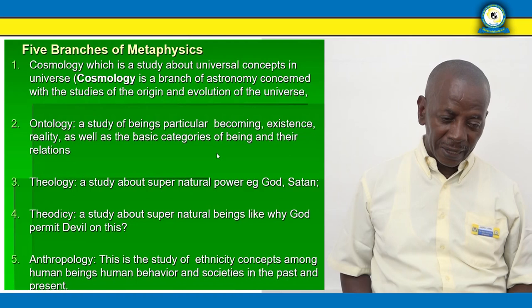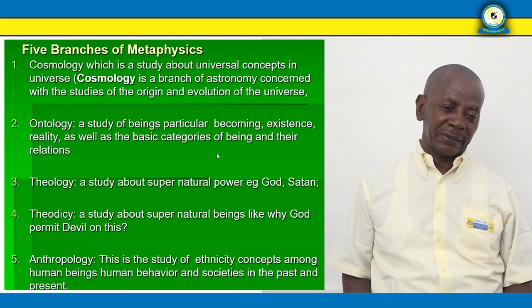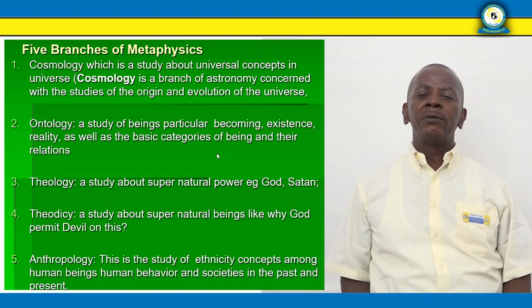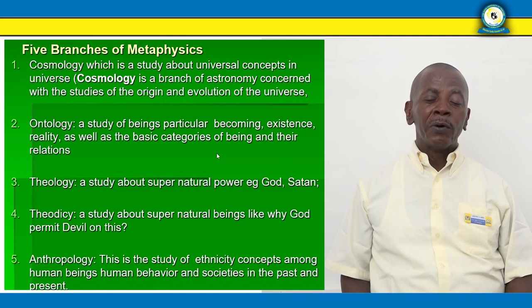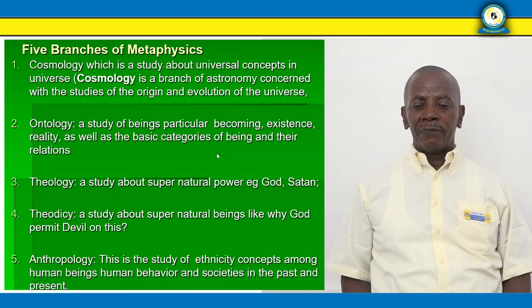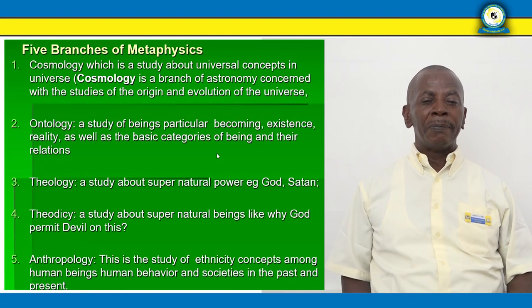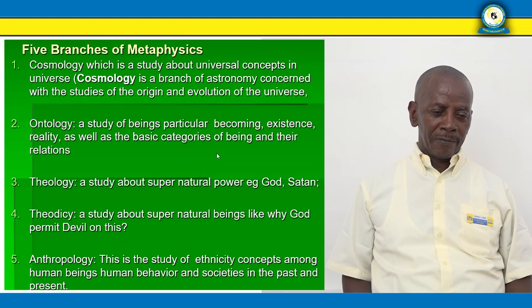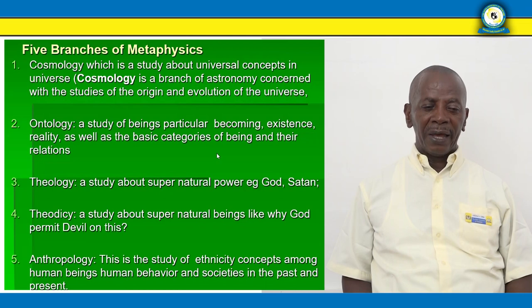Metaphysics is divided into five sub-branches. The first is cosmology — the study of the universe concept in the universe. Cosmology is the branch of astronomy concerned with the study of the origin and evolution of the universe. Here we normally talk about the Big Bang, since astronomers think about how the universe is. The second sub-branch is ontology — the study of beings, particularly becoming, existence, reality, and the basic categories of beings and their relationships.